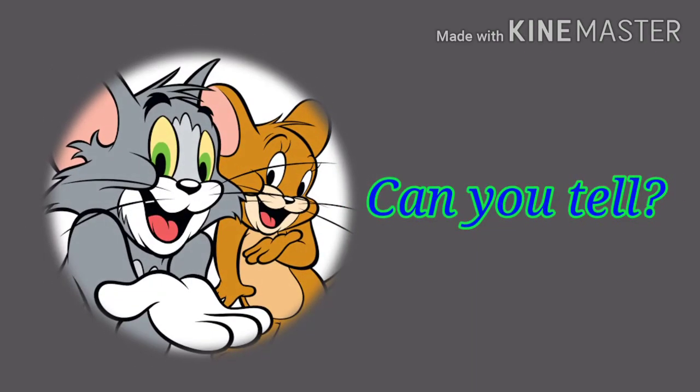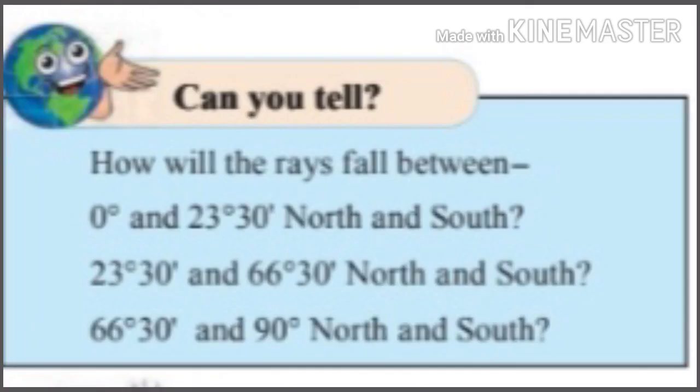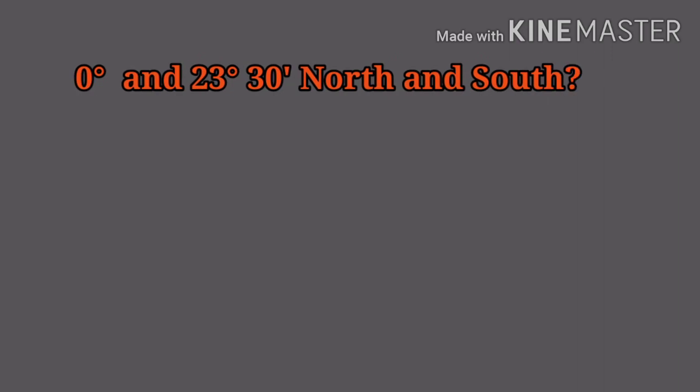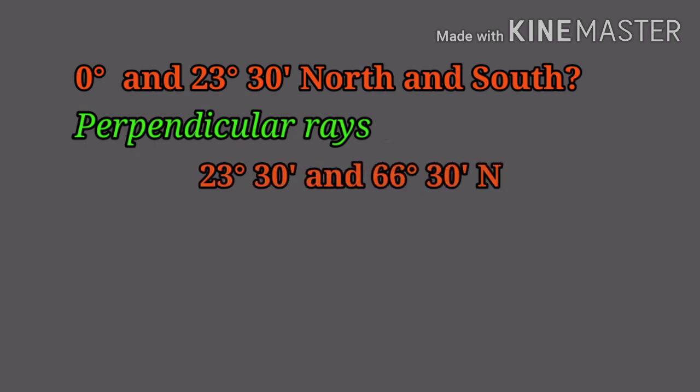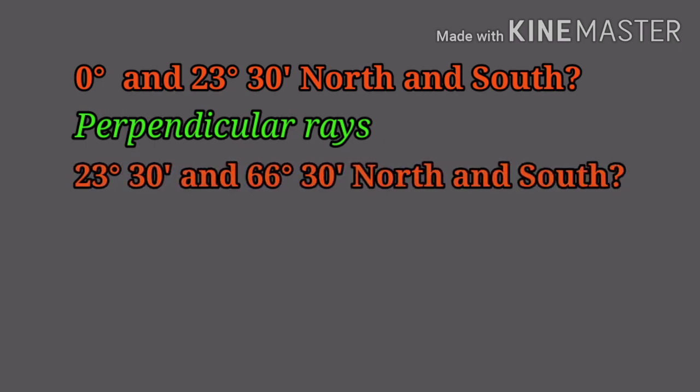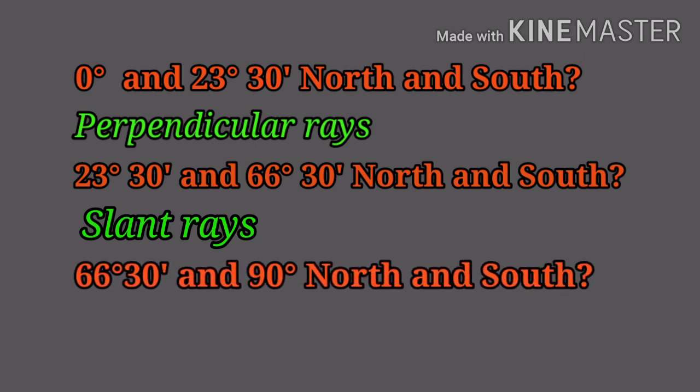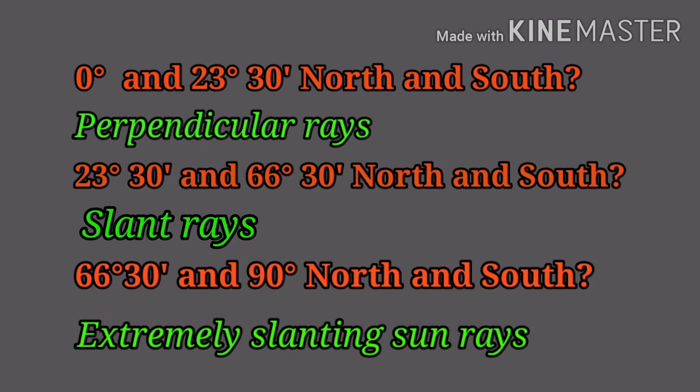Can you tell? How will the rays fall between 0 degrees and 23 degrees 30 minutes north and south? Perpendicular rays. 23 degrees 30 minutes and 66 degrees 30 minutes north and south? Slant rays. 66 degrees 30 minutes and 90 degrees north and south? Extremely slant rays.